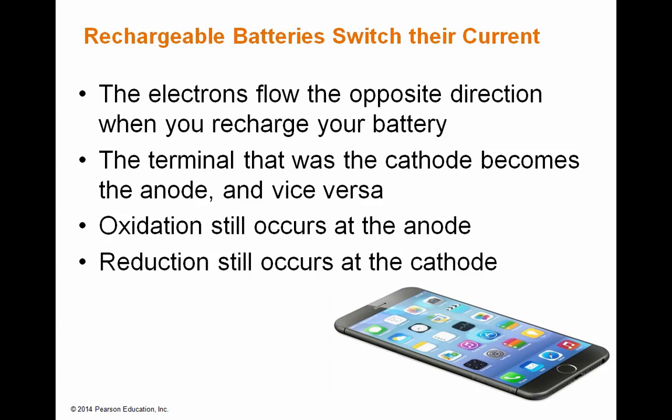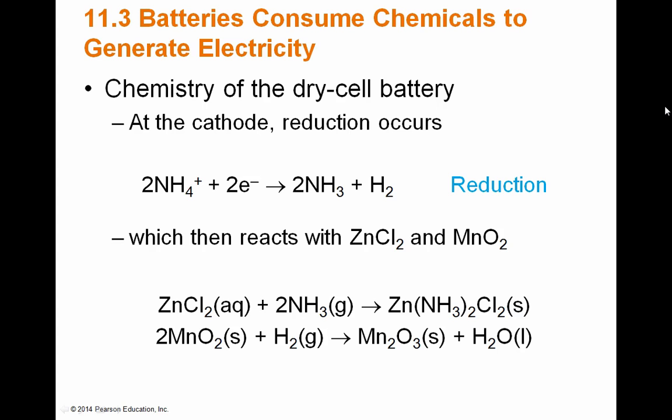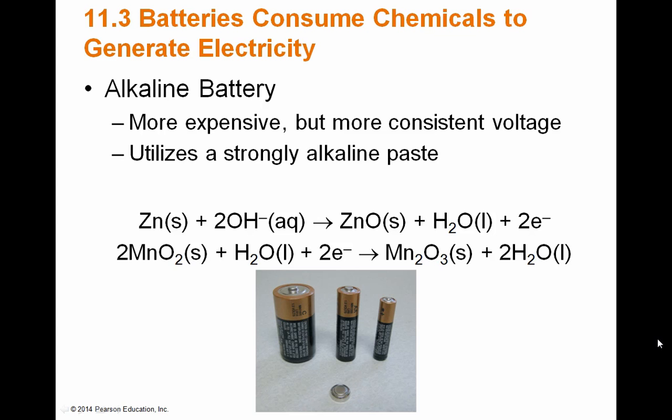Let's look at the chemistry of a dry cell battery — the same example shown previously. In this example, zinc is oxidized. The chemistry at the cathode is more complex: ammonium (NH4+) reacts to produce ammonia, which then reacts with zinc chloride, and hydrogen goes on to react with manganese oxide, producing different chemicals from the starting products. Basically you have your reduction happening in one step, but subsequent reactions occur that prevent it from being reversible and rechargeable.